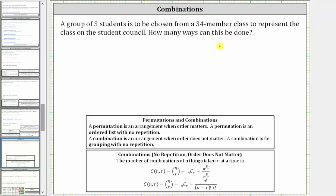We first need to decide whether we have a permutation or a combination. A permutation is an arrangement when order matters, an ordered list with no repetition. And a combination is an arrangement when order does not matter, for grouping with no repetition.